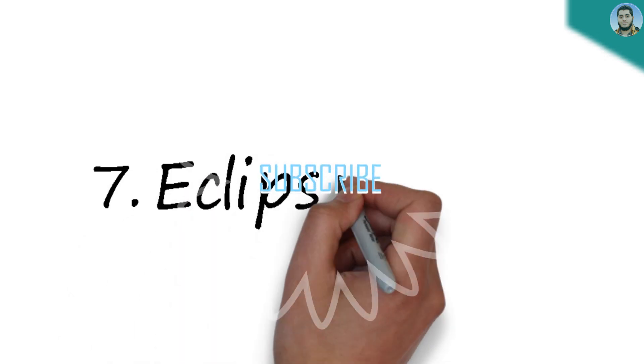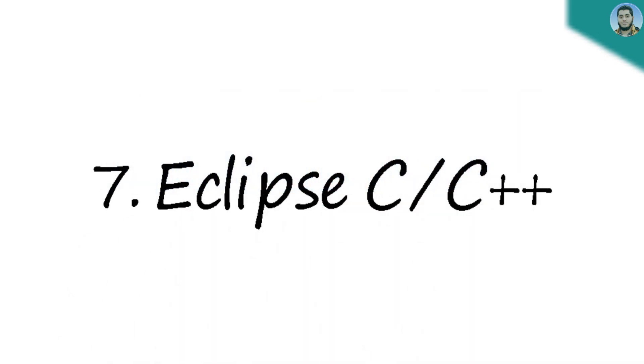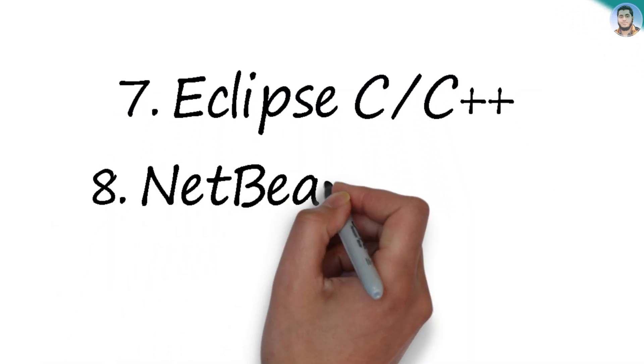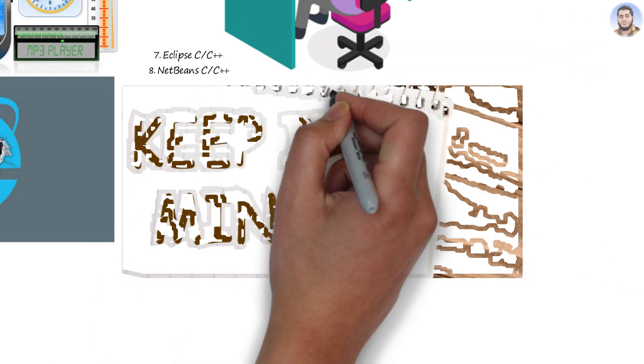Number seven is Eclipse IDE, which is used for C and C++. Number eight is NetBeans, which is also a C and C++ IDE.